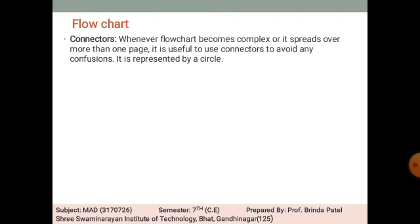Connectors: When a flowchart is complex and spans more than one page, connectors are used to represent and link different parts. When there are many flows, connectors help to avoid confusion, and they are represented by a circle.